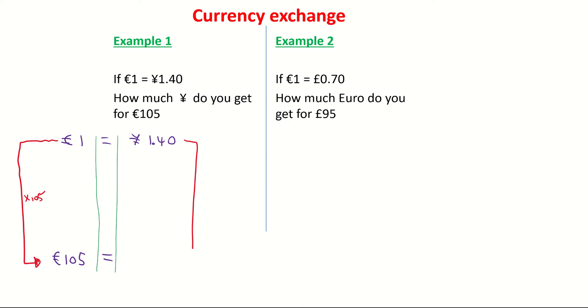So here, I'm basically going to do the exact same thing. I'm going to multiply my 1.40 by 105. And that will give me the value of 105 euro. And when I times that, I'm getting a value of 147 yen.